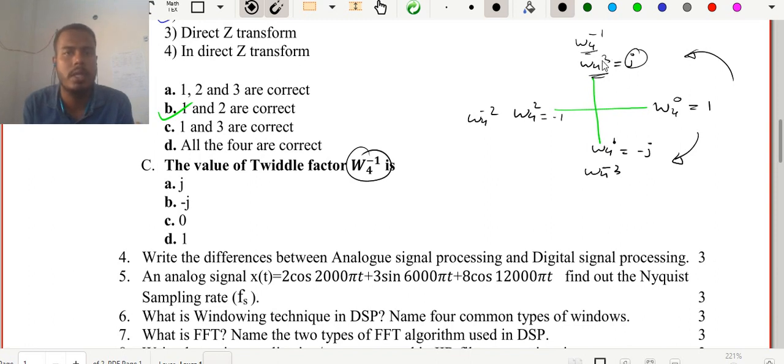Now if you want to find out the value, you can clearly see that W₄⁻¹ value is how much? Because this is same value only. This is j only, right? Because W₄³ and W₄⁻¹, they are in the same position. Whether you go through clockwise direction or anti-clockwise direction, the position of these two things are the same. So the correct answer is option A, which is j.